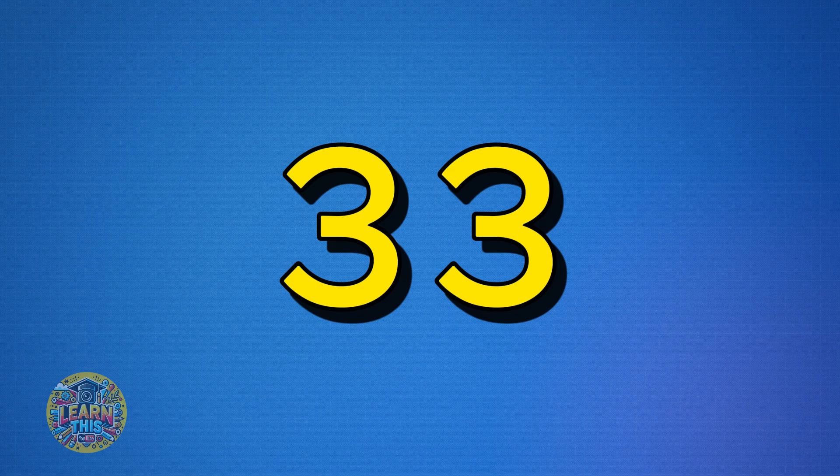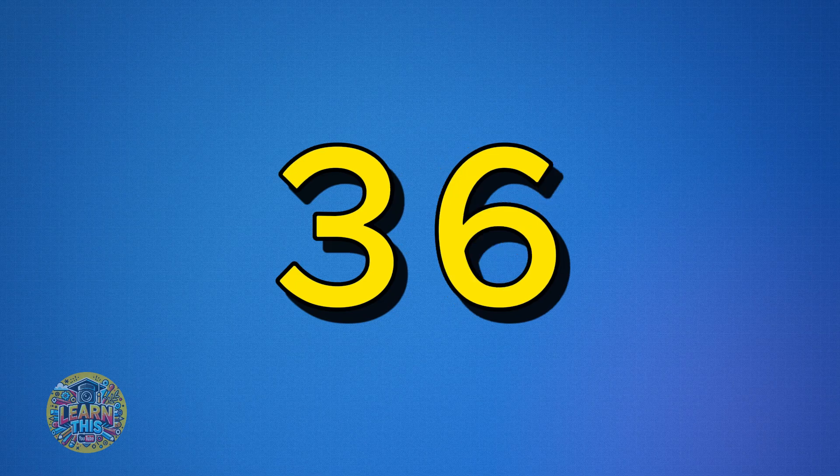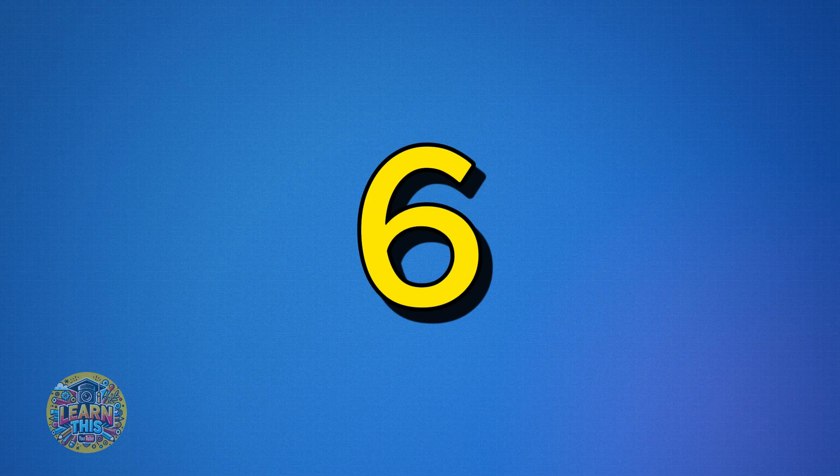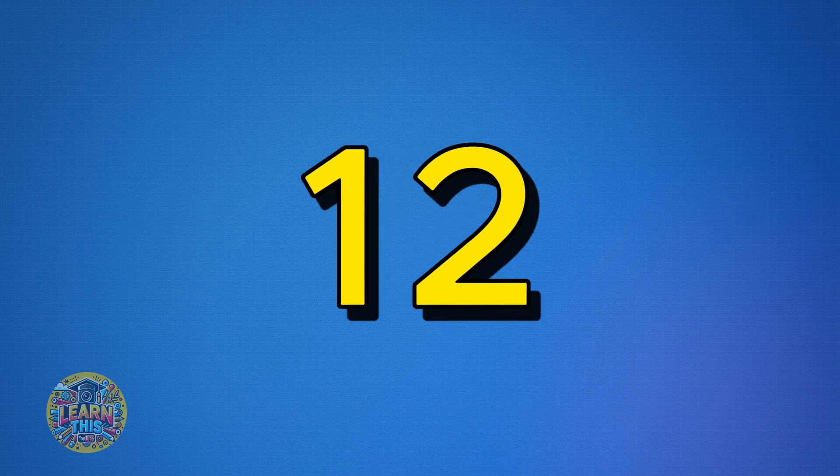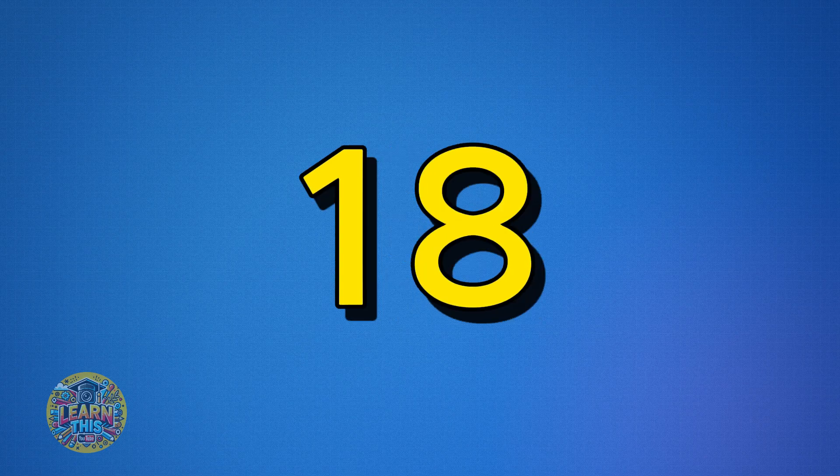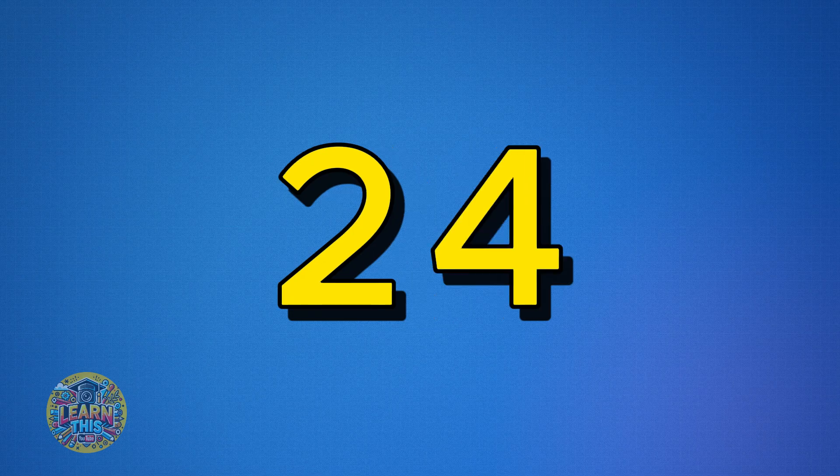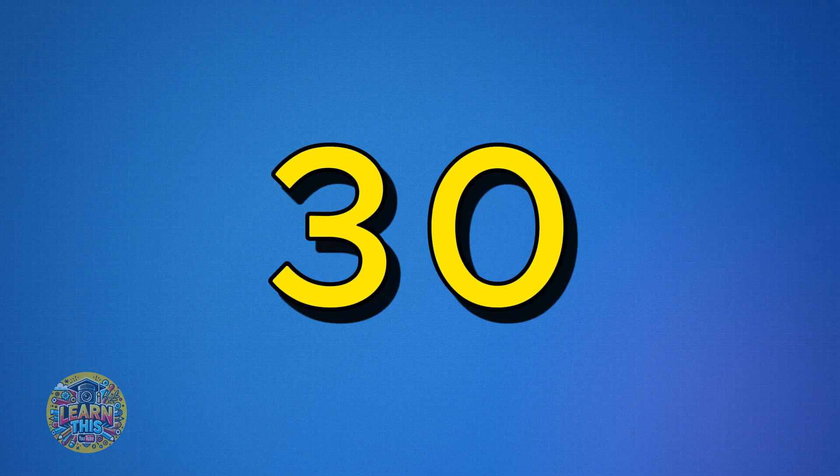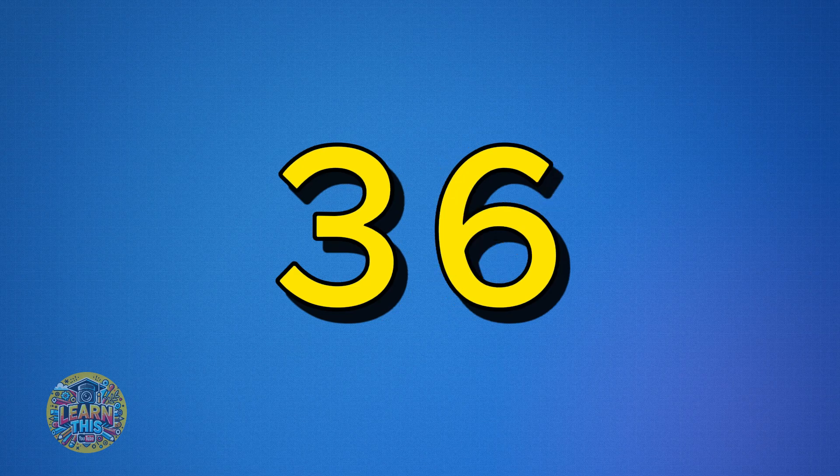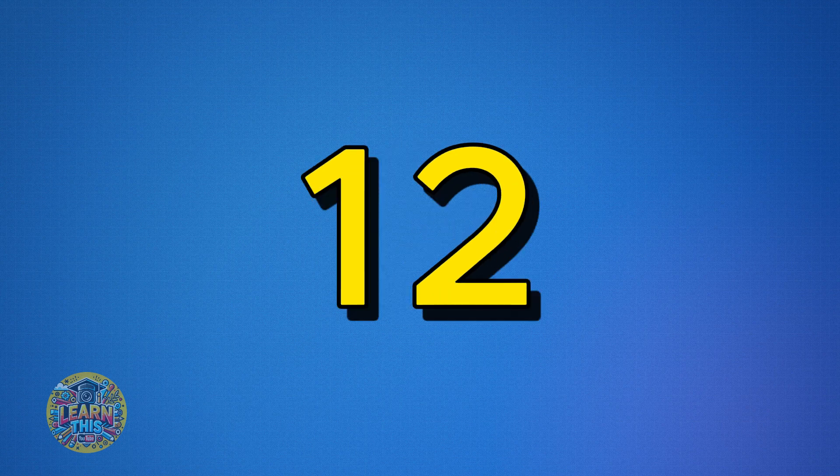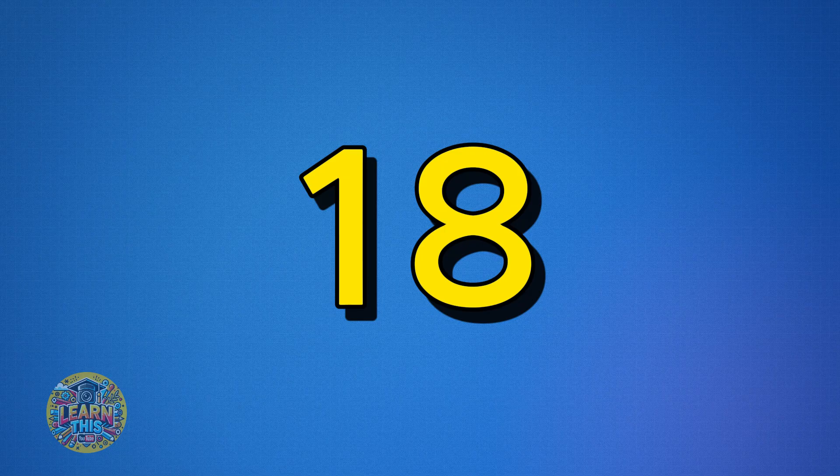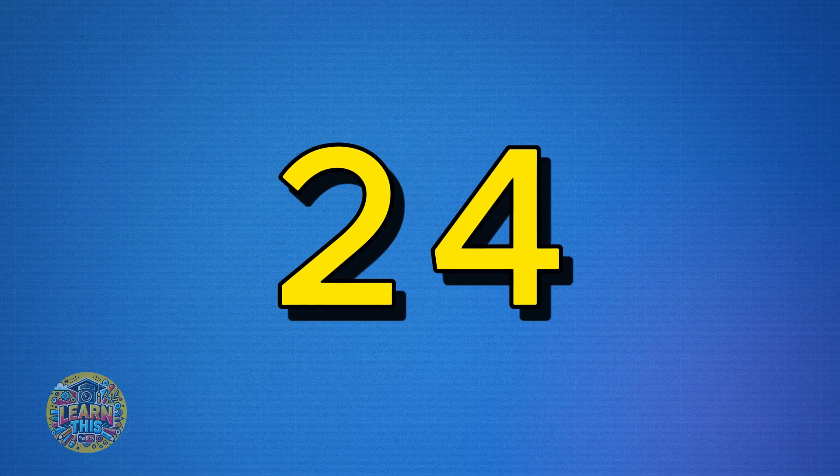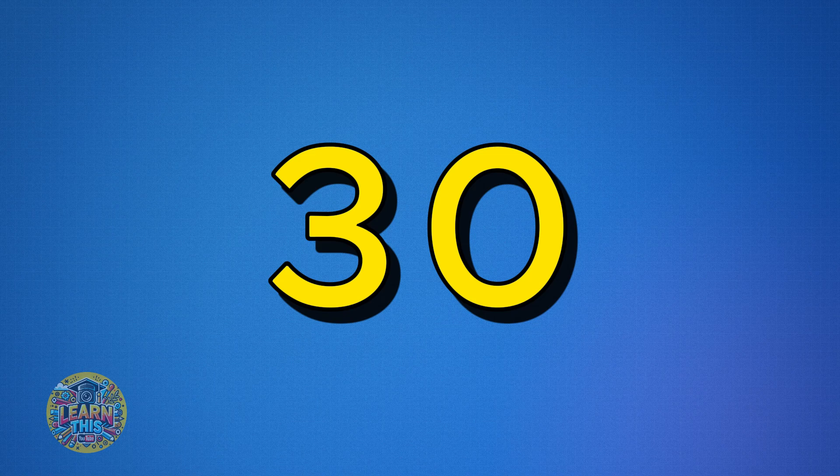Let's do that again but a little faster this time. Three, six, nine, twelve, fifteen, eighteen, twenty-one, twenty-four, twenty-seven, thirty, thirty-three, thirty-six. Again: three, six, nine, twelve, fifteen, eighteen, twenty-one, twenty-four, twenty-seven, thirty, thirty-three, thirty-six. Let's speed things up.